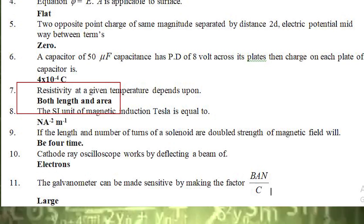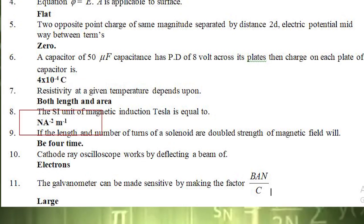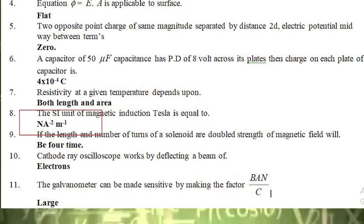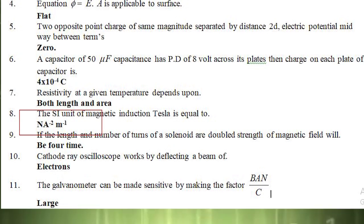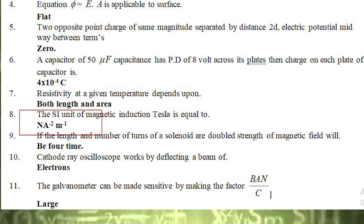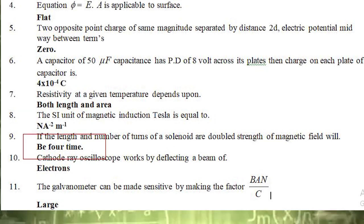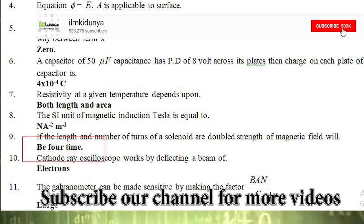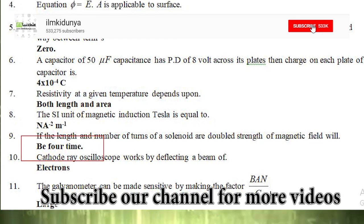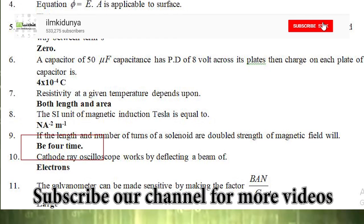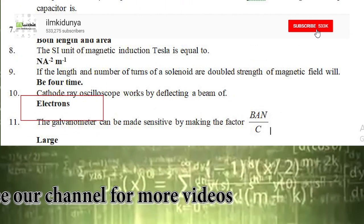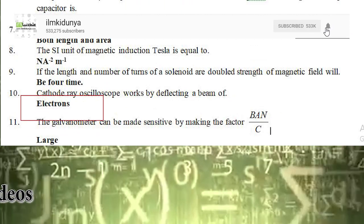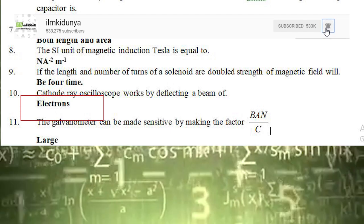The eighth statement is: the SI unit of magnetic induction — Tesla is equal to. The correct answer is N·A⁻² m⁻¹. The ninth statement is: if the length and number of turns of a solenoid are doubled, the strength of the magnetic field will. The correct answer is four times. The tenth statement is: a cathode ray oscilloscope works by deflecting a beam of. The correct answer is electrons.